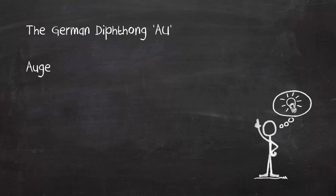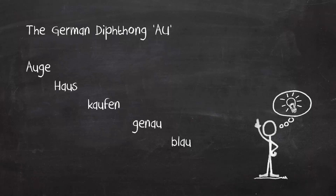Let's have a look at some words with this sound. Listen and repeat: Auge, Haus, Kaufen, Genau, Blau.